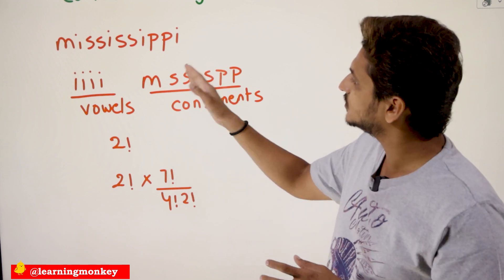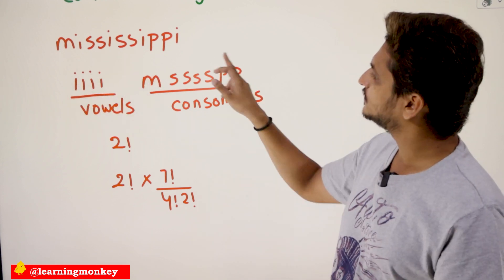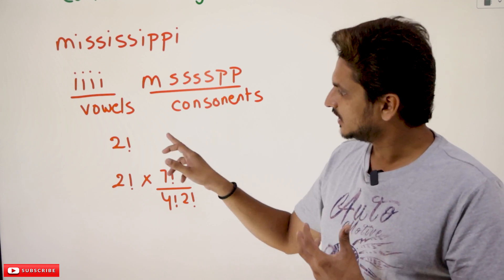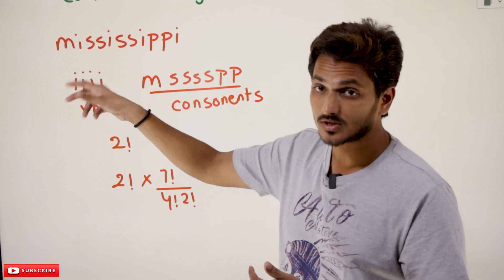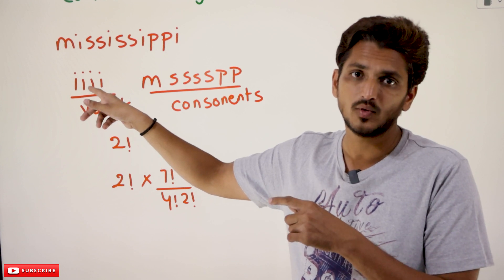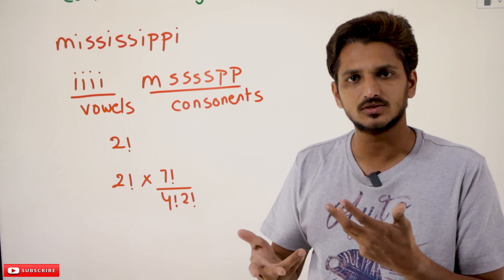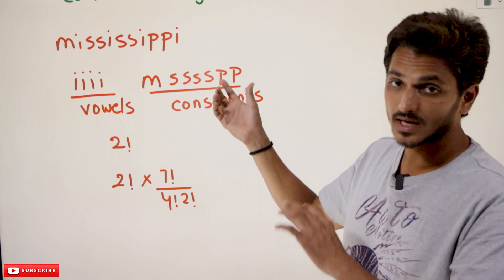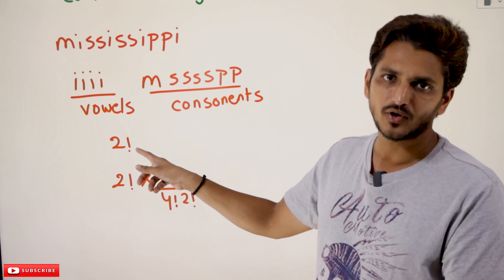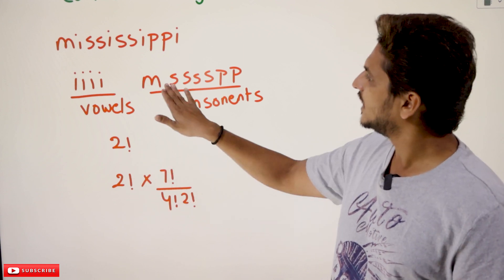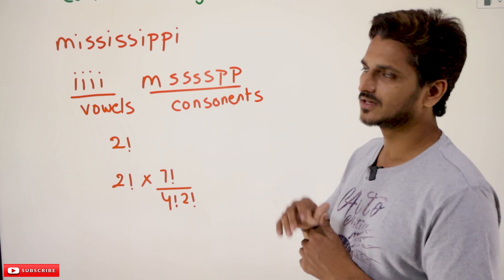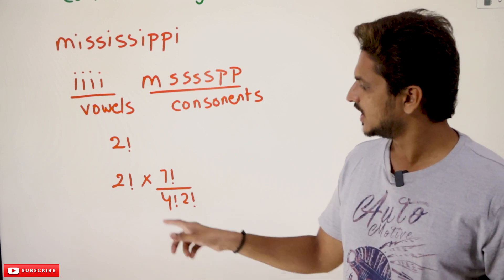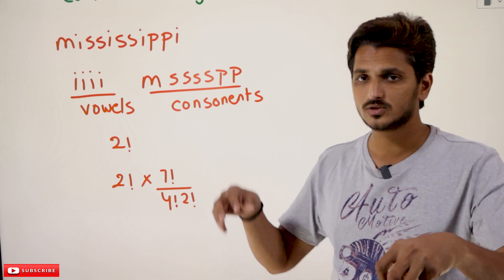You need to understand: you can arrange these two elements in 2 factorial ways. But inside the bundles, you can place consonants in any way and vowels in any way. However, since all four I's are identical, however you arrange them you get the same result — so the vowels bundle contributes only 1 way. For the consonants bundle there are 7 characters, which can be arranged in 7 factorial ways, divided by the repetitions: S repeated 4 times and P repeated 2 times — that is 4 factorial and 2 factorial. So total possibilities are 2 factorial multiplied by 1 multiplied by 7 factorial divided by 4 factorial and 2 factorial.